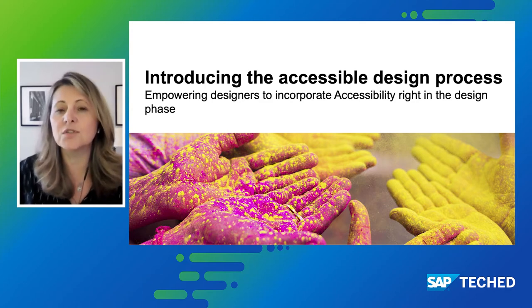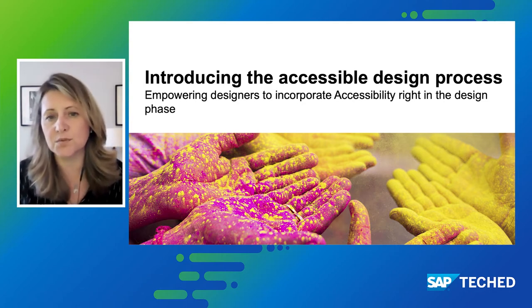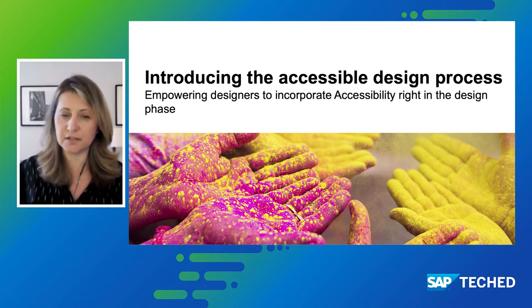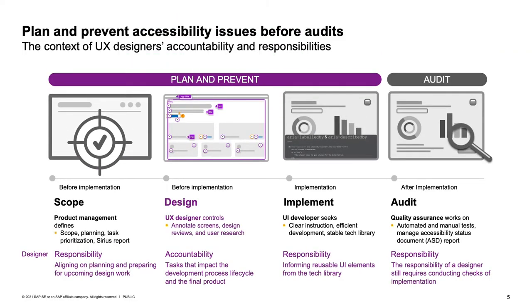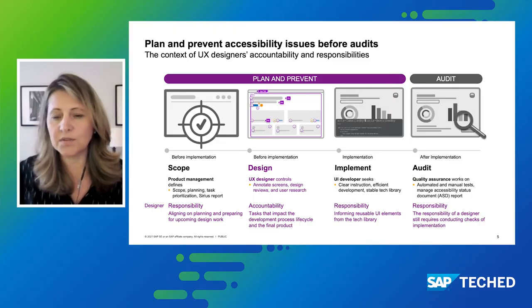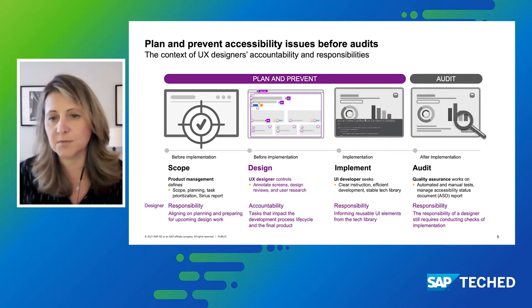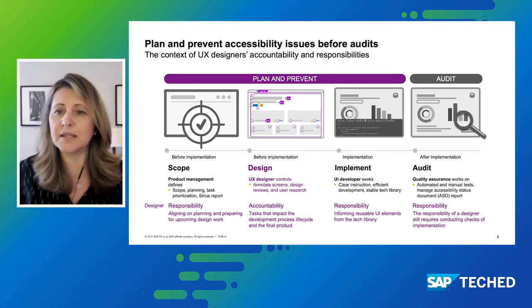Our vision of inclusive design is to deliver supporting tools and strategies to allow designers to confidently deliver inclusive products. We start with this illustration to understand the product development lifecycle. What we have here is a representation per column that goes from product management to design, front-end development, and QA and testing. What we want to do here is contextualize the UX design work and highlight our accountability and responsibilities, starting from planning and prevention — that's where we are located.